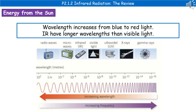In the diagram at the bottom there, you can see the full electromagnetic spectrum, and we're going to keep dropping back into this throughout the physics course. You can see that we've got radio waves on the far left, working right the way through to gamma rays on the far right. As we go from left to right, the wavelength decreases but the frequency increases.